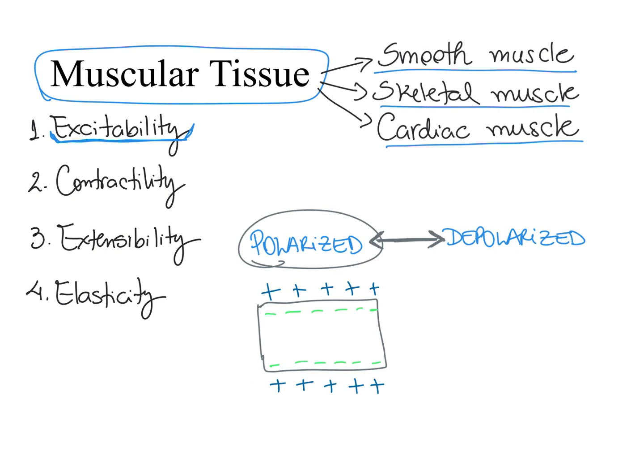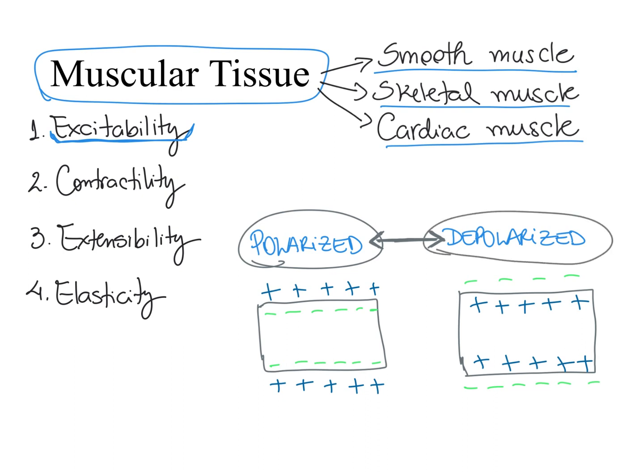Nerve cells and muscle cells are capable of reverting the polarity. So muscle cells and nerve cells, when stimulated, go from being more negative on the inside to being more positive on the inside when compared to the outside. When that happens, we say that the muscle cell or the nerve cell is depolarized. This change in voltage is what we call an electrical signal — that is an action potential. So muscle cells and nerve cells are excitable cells; consequently, they have the property of excitability.